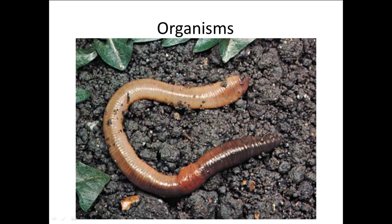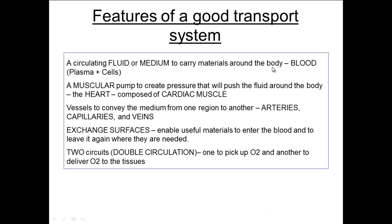For a multicellular organism to have a good transport system it needs to have a few features. One of those features is a medium to carry the nutrients around the body — in animals we call that blood, and that's made up of plasma and those red blood cells and white blood cells. You also need a pump to create the pressure that's going to force that fluid around the body,